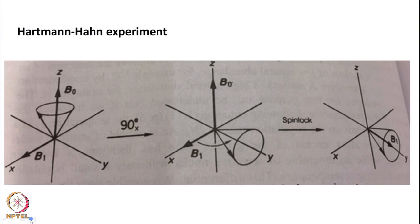Vectorially: we start with magnetization in B0 in the Z direction, and here is our B1 field in the transverse direction. We apply a 90-degree pulse — say an X pulse — and now the spin is in the XY plane. Then we lock it by applying a pulse that holds it in the XY plane. By locking both proton and carbon in this same direction, we maintain thermal contact between the two nuclei, which is the cause of the sensitivity enhancement. This can be done easily in solids.